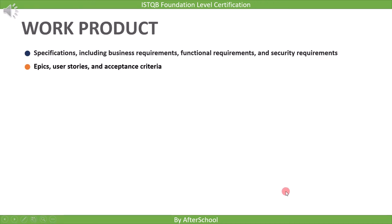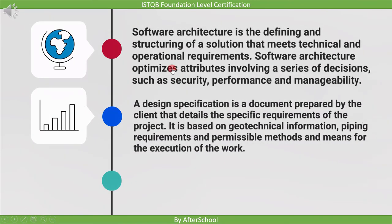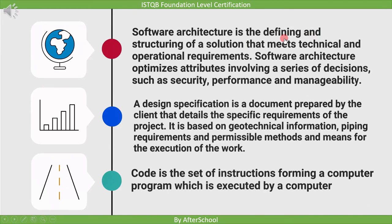The next work product is architecture and design specifications, and code. Software architecture is the defining and structuring of a solution that meets technical and operational requirements — it optimizes attributes involving a series of decisions such as security, performance, and manageability. A design specification is a document prepared by the client that details the specific requirements of the project, based on geotechnical information, piping requirements, and permissible methods and means for execution of the work. Code is the set of instructions forming a computer program, which is executed by a computer.